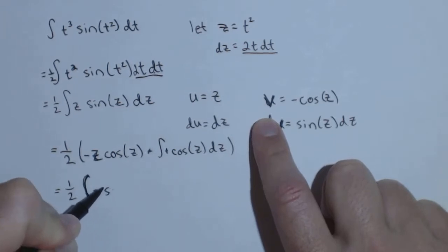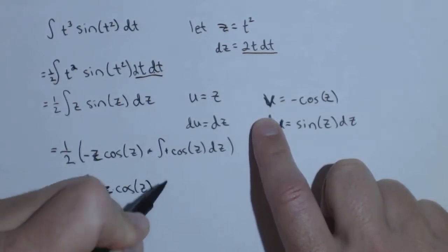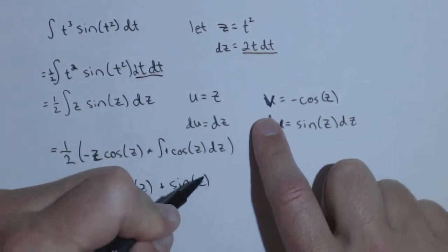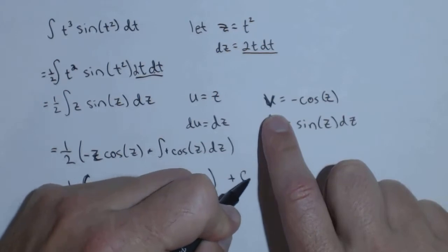So I have negative z cosine of z, antiderivative of cosine is sine of z, and at the end I've got a plus c.